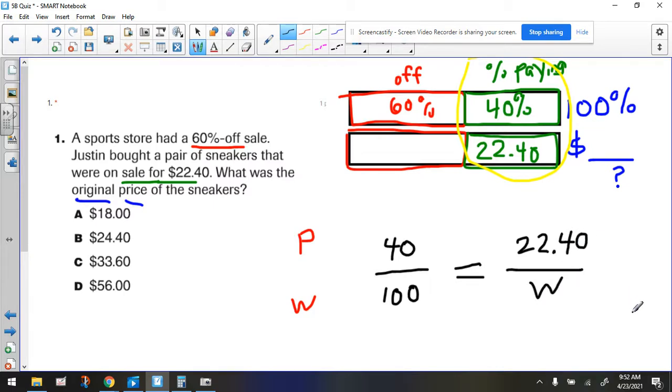And we're looking for the whole or the full price. Now, my recommendation to get this to be a little more user-friendly, let's simplify this ratio on the left. We can start by getting rid of the zeros, so that's essentially dividing by 10. And then we can further reduce it.